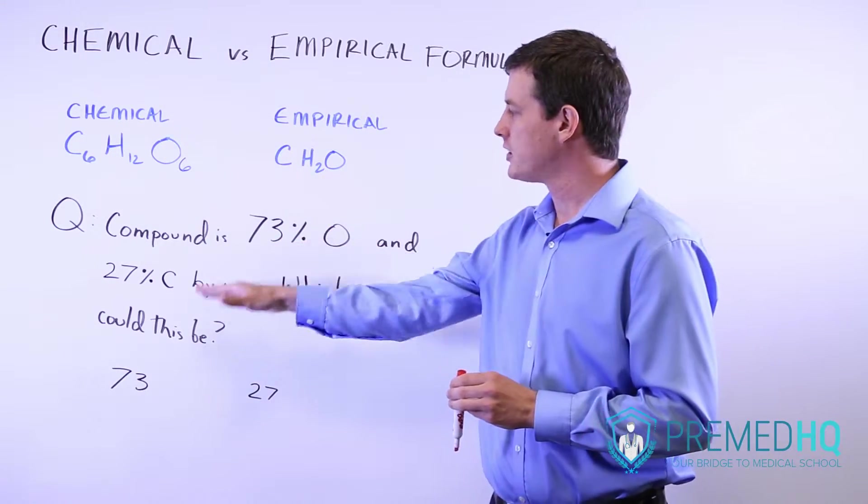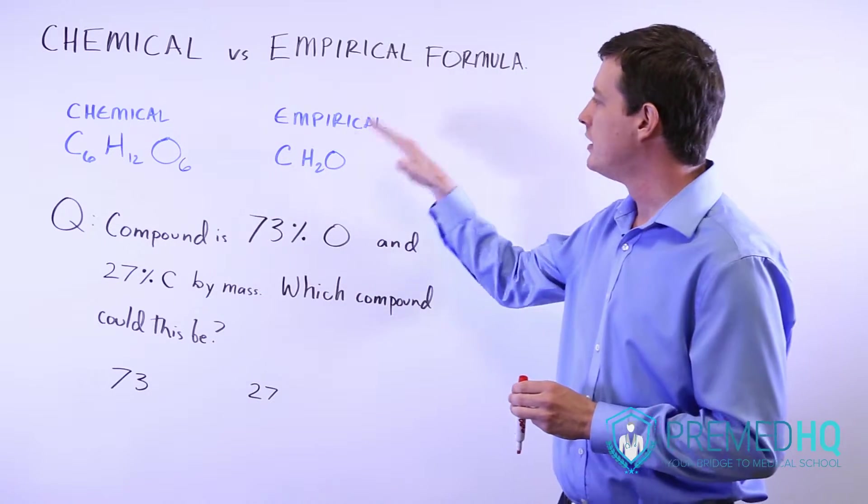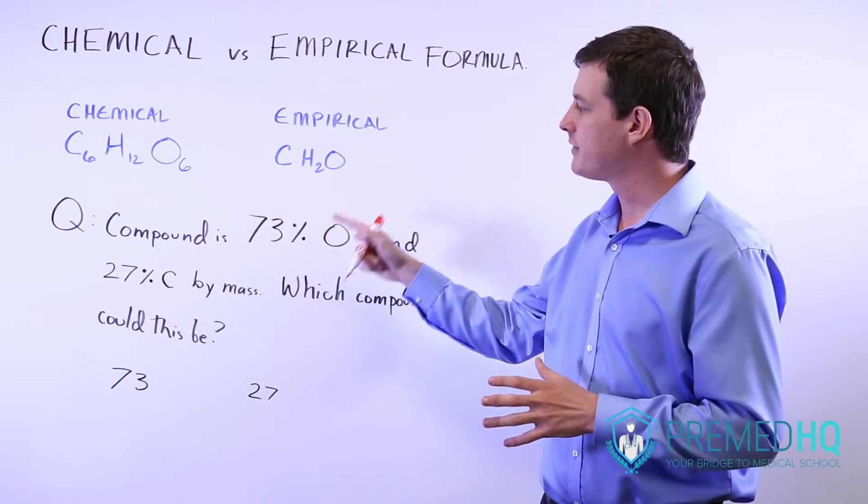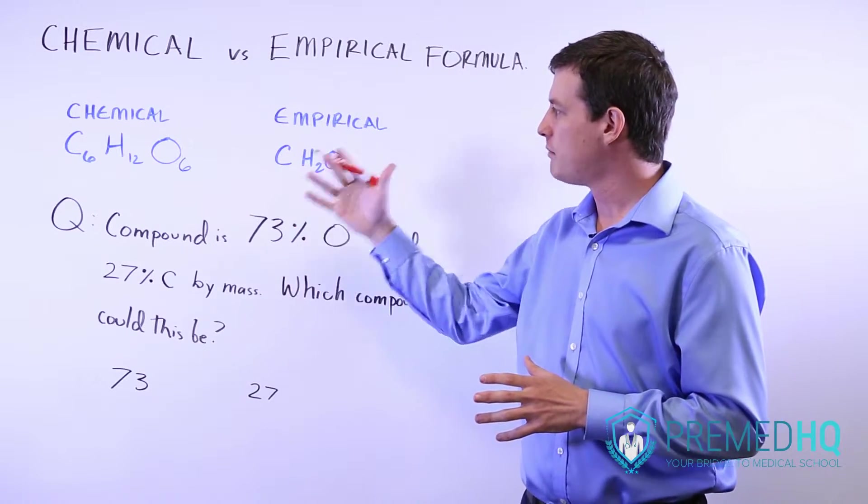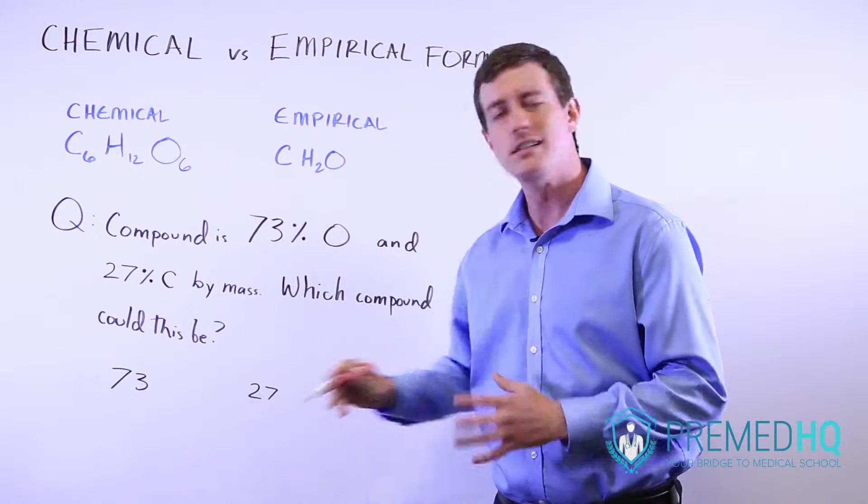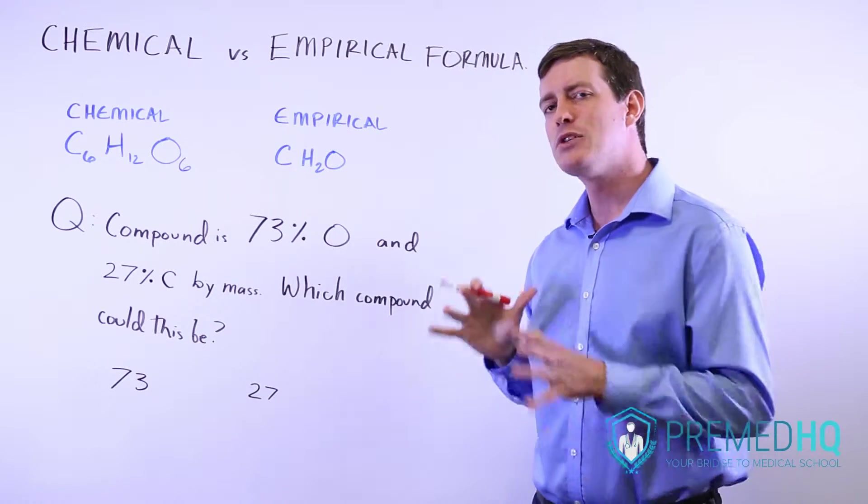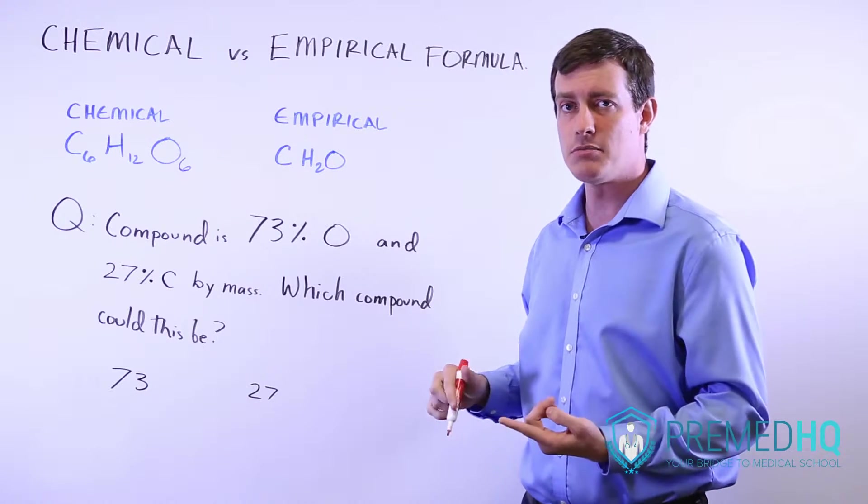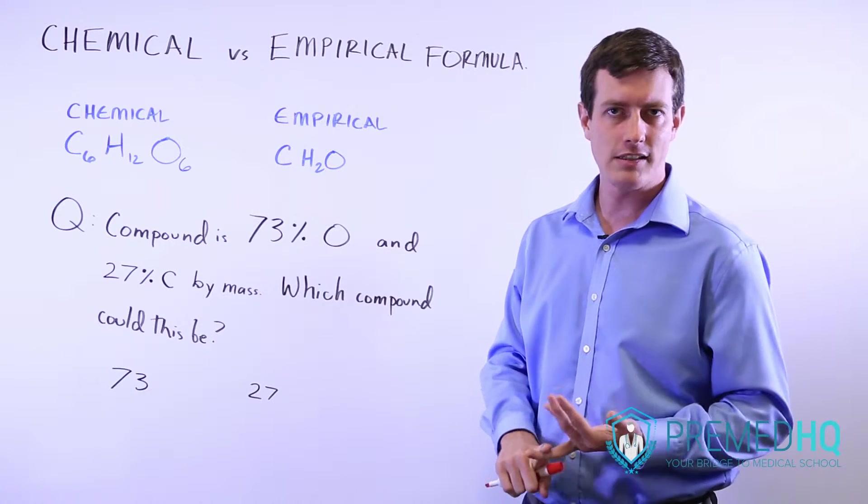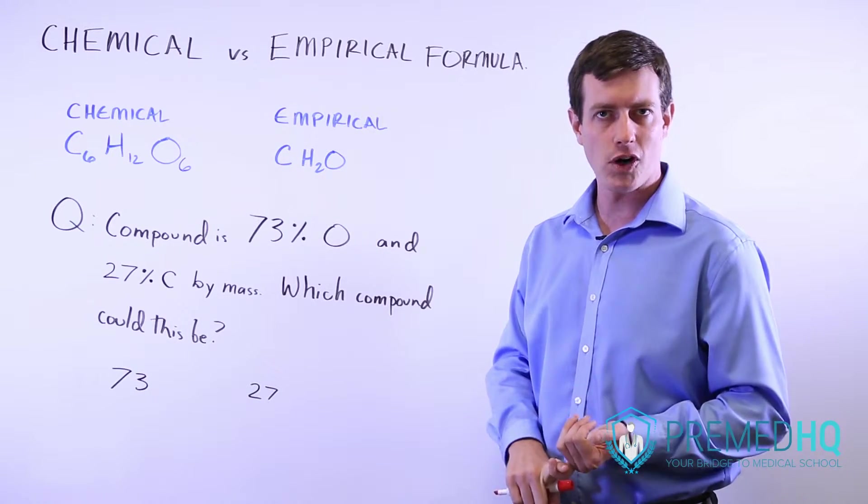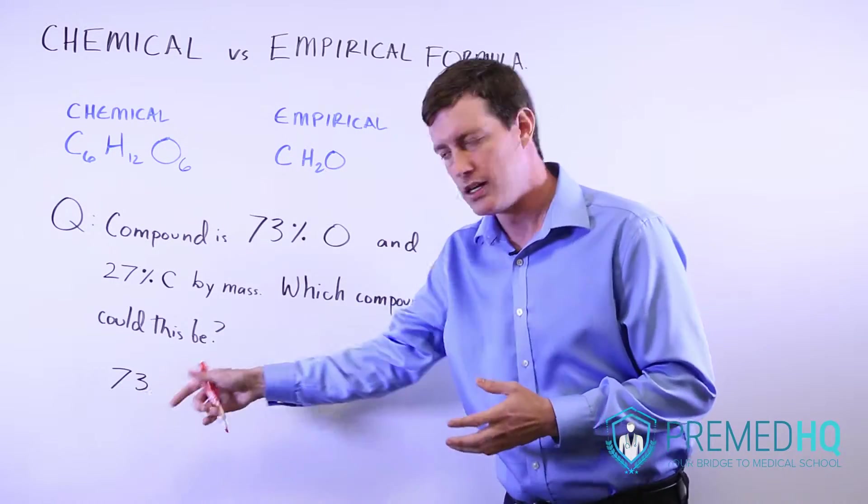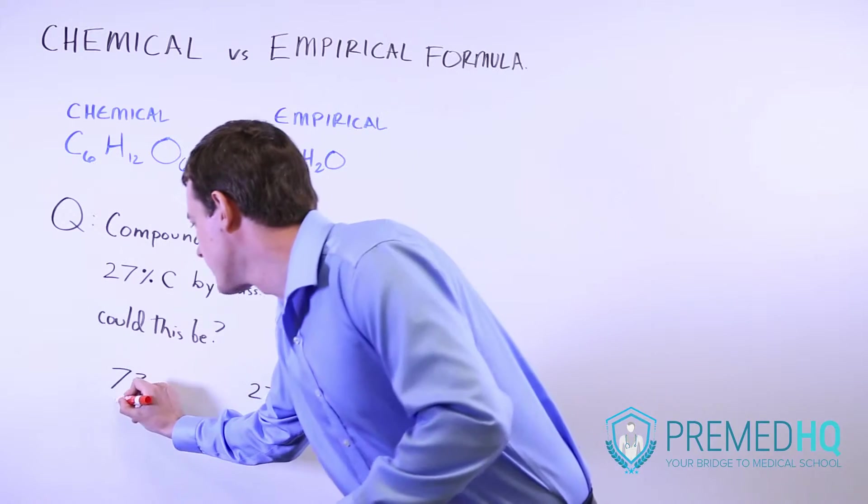From these percentages, we can work our way to the empirical formula. We have to find some number that is a multiple of 16, the mass number of oxygen, that fits neatly into 73. The options we have are 16, 32, 48, or 64. We could go up to 80, but that exceeds 73. Let's start with 64.